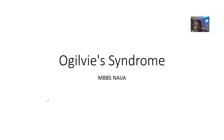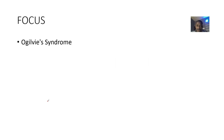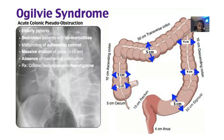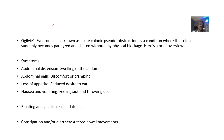We'll be looking at the next syndrome before us. That's what is known as Ogilvy syndrome. So for this Ogilvy syndrome, it's also known as Acute Colonic Pseudo-Obstruction. Pseudo-obstruction means the obstruction is not really complete.